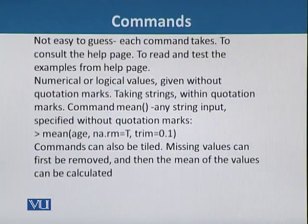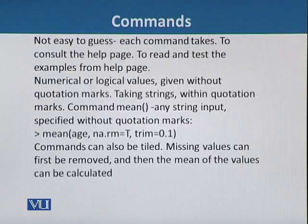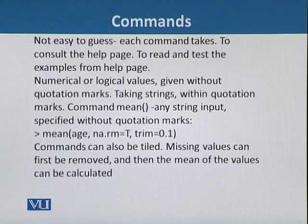It is not always easy to guess what arguments each command takes. In such cases, it is best to consult the help page for the function and read the arguments section. It is also useful to test the examples from the help page. In general, arguments that take numerical or logical values are given without quotation marks, while arguments taking string values need to be given within quotation marks. For example, mean() does not need any string input and all its arguments are specified without quotation marks.